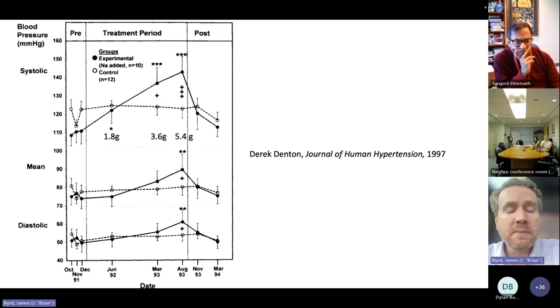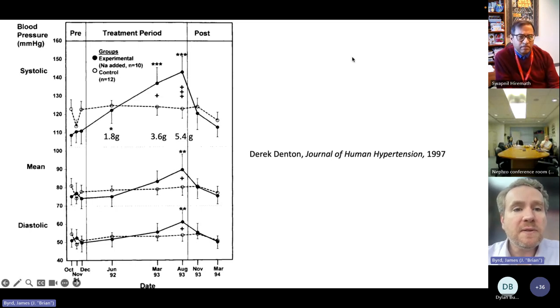Derek Denton did a very nice study, published in Journal of Human Hypertension. In this study, he took chimpanzees whose baseline diet is fruits and vegetables and supplemented their diet with initially 1.8 grams of sodium and then 3.6 grams and then 5.4 grams. What you can see is that in this experimental group, the blood pressure continued to increase in proportion to the amount of sodium added to the diet. After the sodium was removed from the diet, the blood pressure came down. This was over the course of a couple of years.